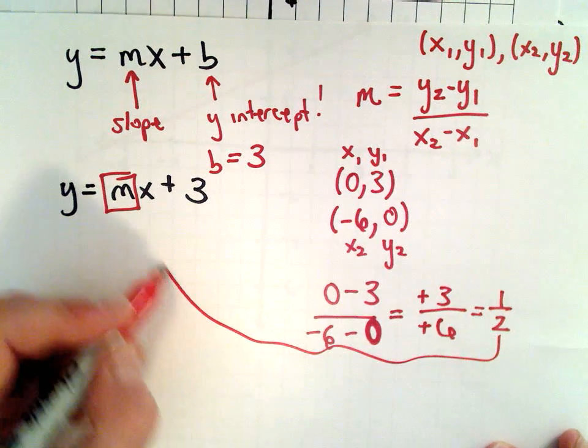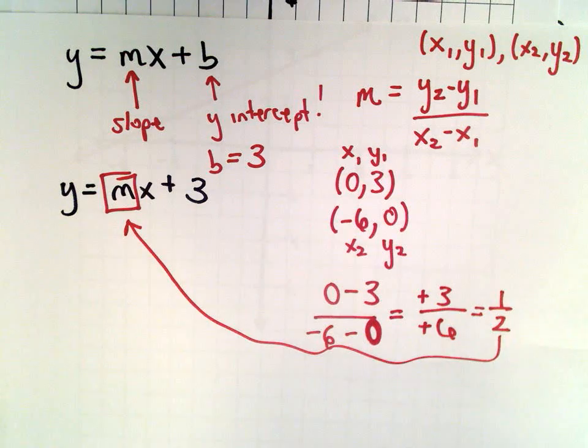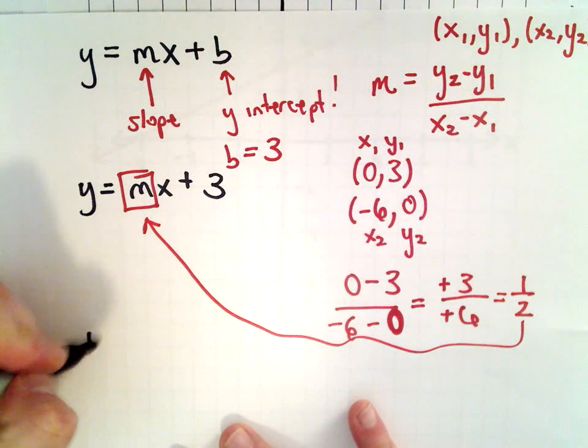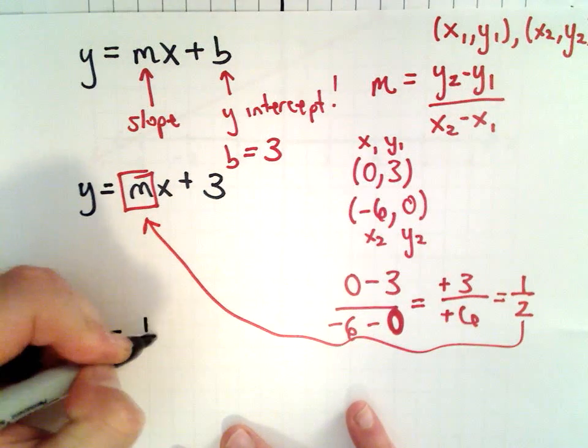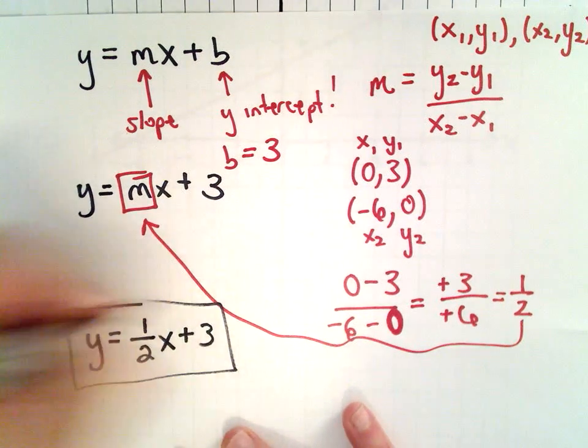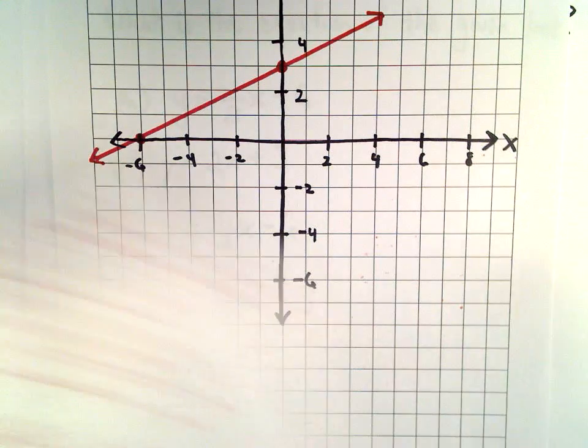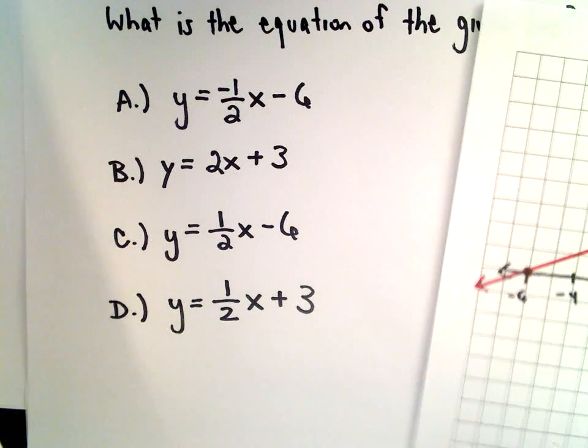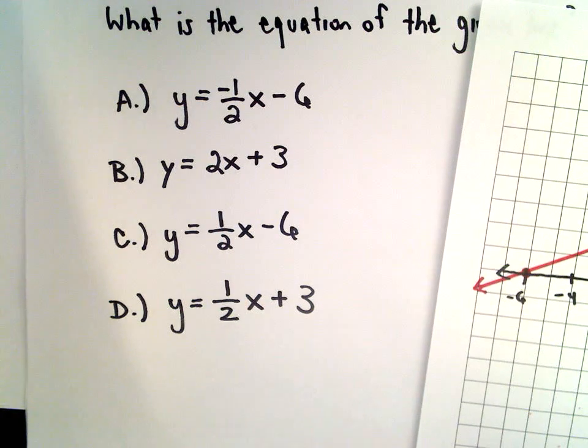So now all I have to do is just substitute that in, and we will have our solution. So y equals 1 over 2 multiplied by x plus 3 will be the solution in this case. And I believe, let's see, 1 half x plus 3, that's going to be answer choice D.